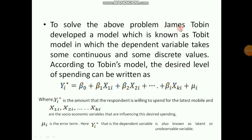To solve this problem, James Tobin — a Nobel laureate — developed the Tobit model, in which the dependent variable takes some continuous and some discrete values. According to the Tobit model, the desired level of spending is: y*_i = beta_0 + beta_1*x1_i + beta_2*x2_i + ... + beta_k*xk_i + u_i, where y*_i is the amount the respondent is willing to spend on the latest mobile phone, x1, x2, ... are socio-economic variables, and u_i is the error term.